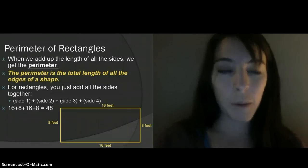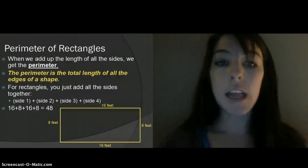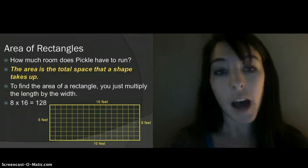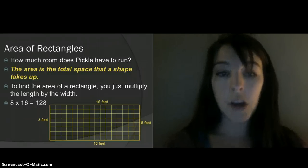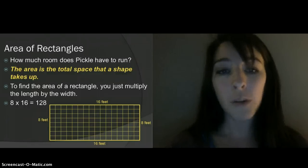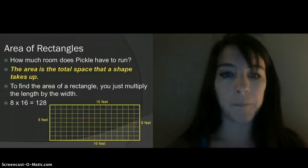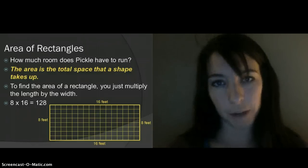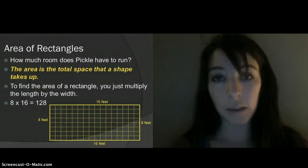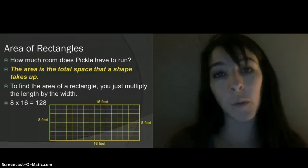Now, when we wanted to figure out how much space she'd actually have to run around, that was a little bit of a different calculation. That was how we figured out the area of Pickle's playpen. To find the area of a rectangle, you multiply the length times the width. The area just tells you the total space that a shape takes up, or all the stuff that's inside of that shape — all the stuff inside of the perimeter, basically. So for us, when you multiply the length, it was 16 times the width, which was 8. The area for Pickle's playpen space was 128 square feet.